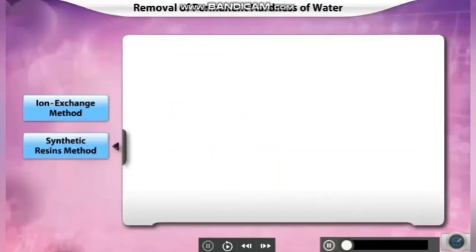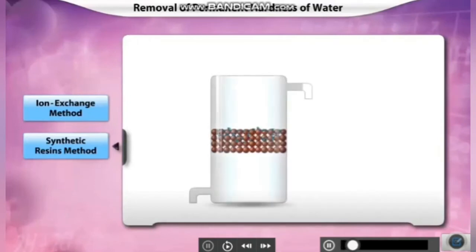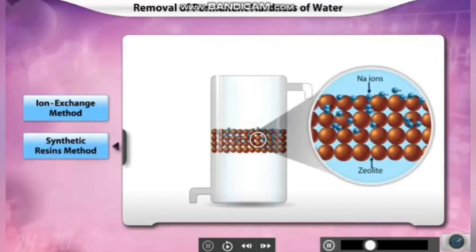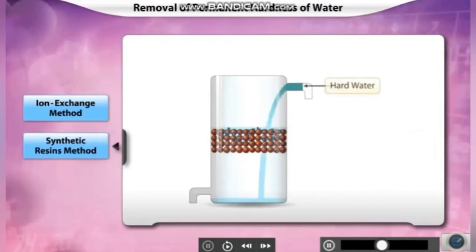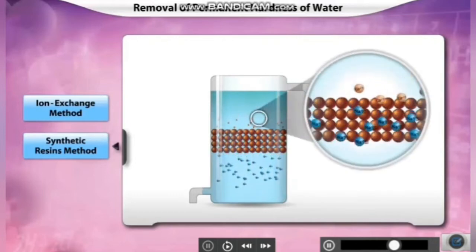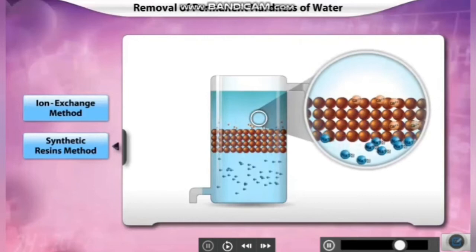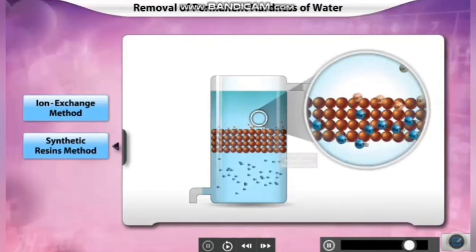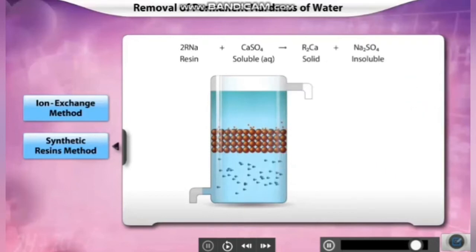The ion exchange makes the insoluble calcium zeolite get precipitated through filtration, and the soft water containing sodium can be removed separately. In the synthetic resins method, resins made up of sodium ions are used to remove the hardness of water. Hard water poured through the resin causes sodium ions and the resin to exchange with calcium and magnesium of the hard water — the calcium and magnesium get precipitated out, and the water containing sodium ion is collected separately. That is how the hardness of water can be removed.